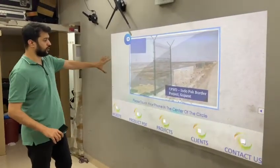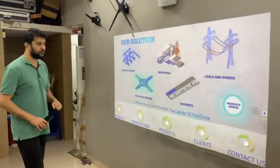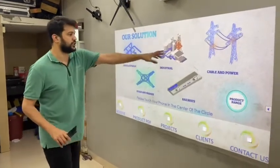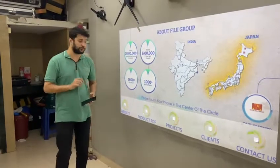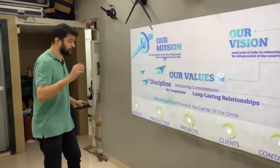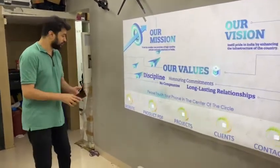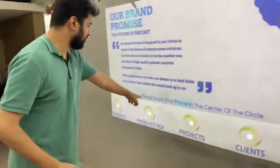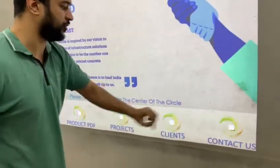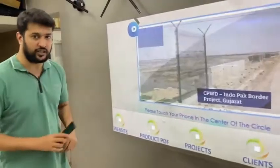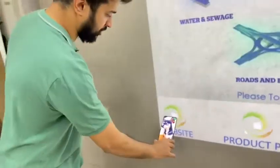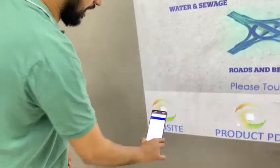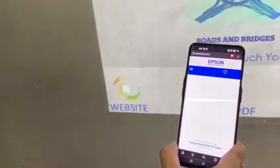We are showcasing a slideshow of products — if you touch anywhere it will give you information about that. But today we're here to talk about something very important and very easy to use. If you see over here, it says 'please touch your phone in the center of the circle.' That's where the magic happens. This is my phone — I just touch it over here and it opens a website for the specific company we decide on.